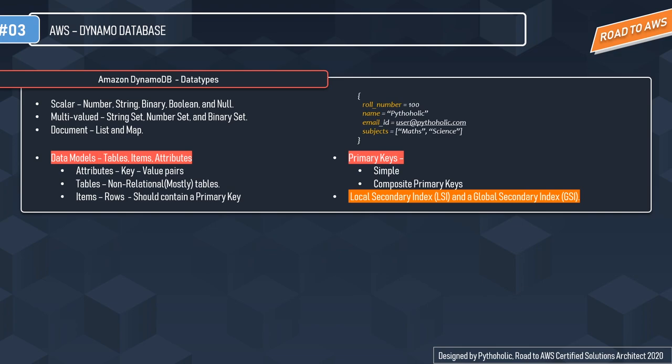The data types DynamoDB supports fall into three categories: scalar types — number, string, binary, boolean, and null; multi-valued types — string set, number set, and binary set; and document types — list and map. The data model consists of tables, items, and attributes. Attributes are key-value pairs; tables are mostly non-relational; and items are essentially rows. Each item must contain a primary key, based on which DynamoDB creates partitions and you access the data.